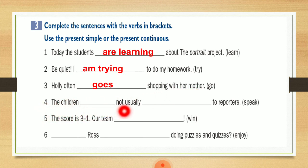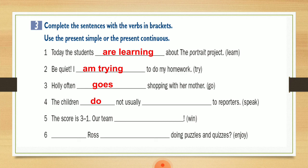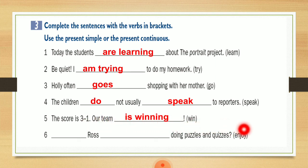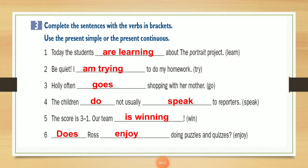Number four: The children not usually to reporters — وهون عندي keyword usually اللي هي للـ simple present. And here we are talking about something that is happening now — شيء هلا عم بيحدث الآن بيحدث أو في نفس وقت التحدث. The last sentence: Ross doing puzzles and quizzes، وعندي الفعل enjoy. اتفقنا إنه أنا لما أحكي عن المشاعر فأنا باستخدم permanent state — الحالات الدائمة. وenjoy هي من الأشياء اللي بحكي فيها عن المشاعر. مشان هيك رح يكون الجواب: Does Ross enjoy doing puzzles and quizzes?